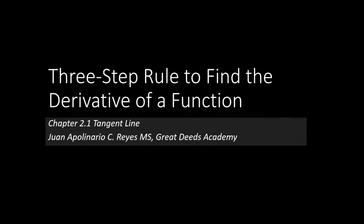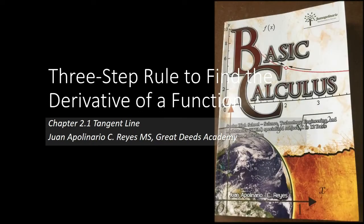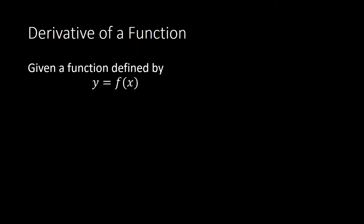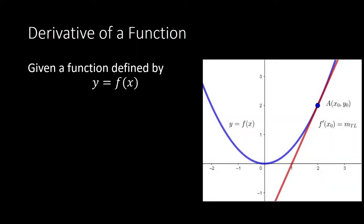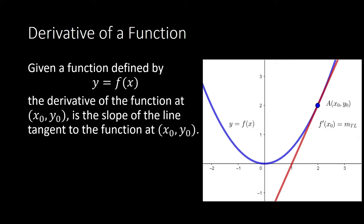Three-step rule to find the derivative of a function. What again is the derivative of a function? Given a function defined by y equals f of x, the derivative of the function at point (x₀, y₀) is the slope of the line that is tangent to the function at that point. So what is the slope of that tangent line? That is our concern in getting the derivative of a function.